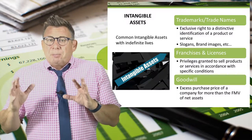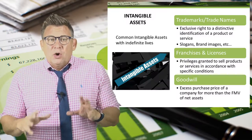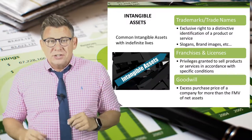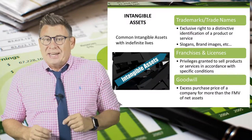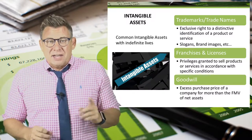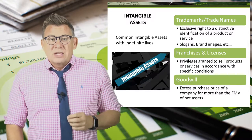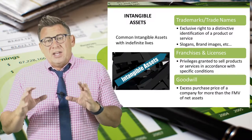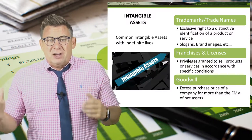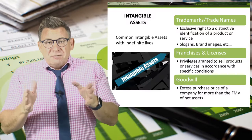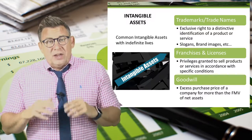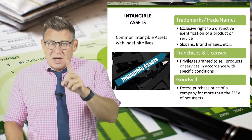Trademarks and trade names protect a distinct slogan or image of a company. Don't start your own company with the slogan "Just do it," or Nike will sue you for trade name infringement. Franchises and licenses are privileges granted to sell a product or service in accordance with specific conditions. And finally, goodwill is a unique intangible asset — it is the amount paid for a company in excess of the fair value of the net assets. This video will focus on the accounting for intangible assets with indefinite useful lives other than goodwill.